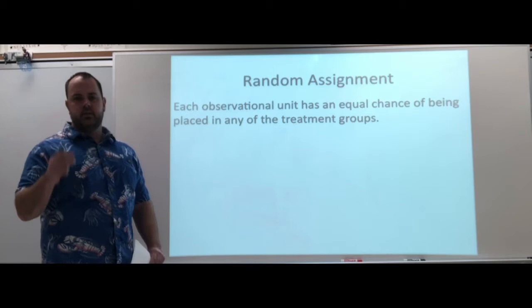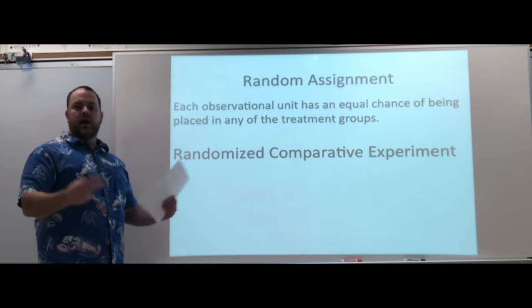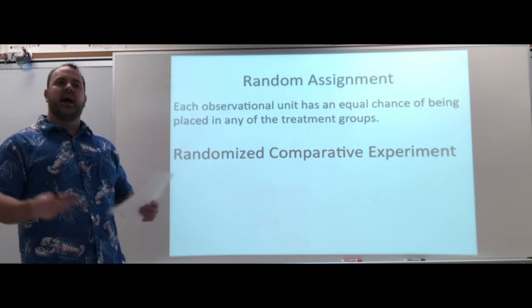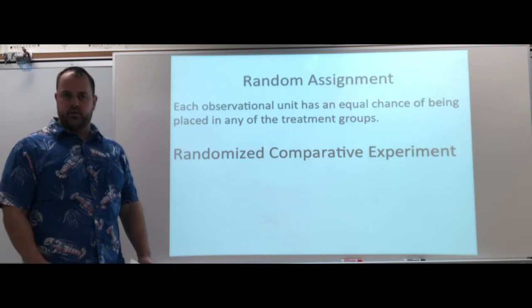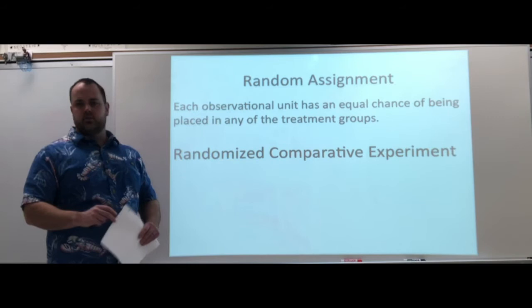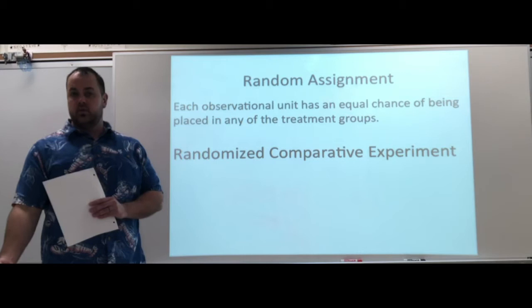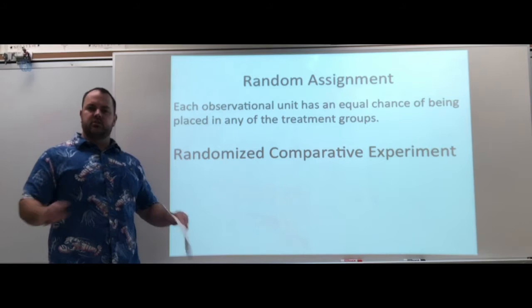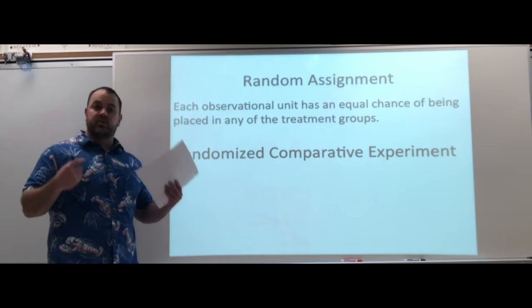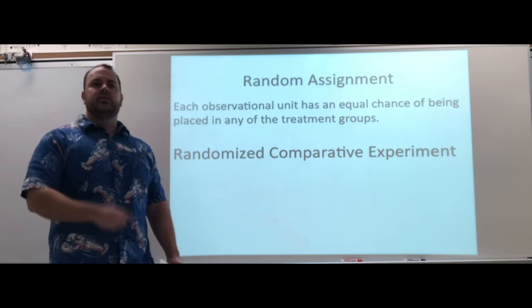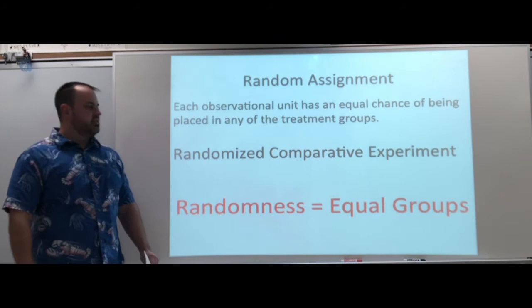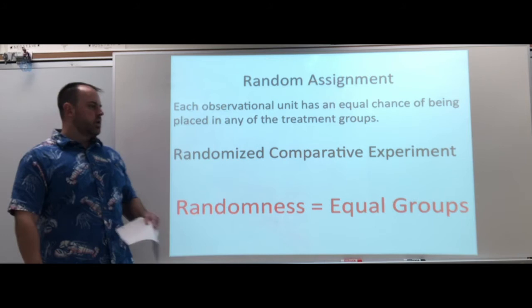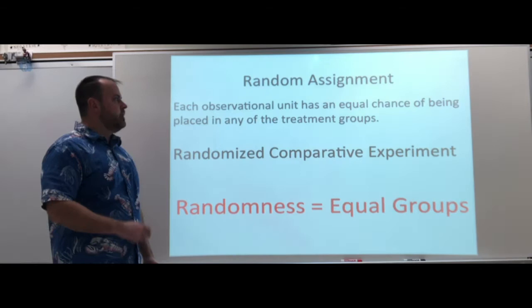If you have random assignment, then it's going to be a randomized comparative experiment. We're going to have different groups, and at the end of our treatment we're going to compare those groups to each other. Going back to the strength training program: you don't want all the athletic students in one group and all the non-athletic students in the other. You want them mixed in between. If you have that mix, it's not going to eliminate athletic vs. non-athletic students, but now they're equally split between the two groups — so it's a fair comparison, and we can see it's the training program causing the response. Randomness equals equal groups.